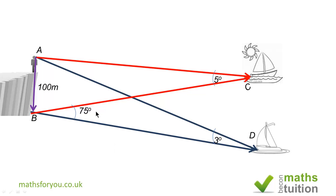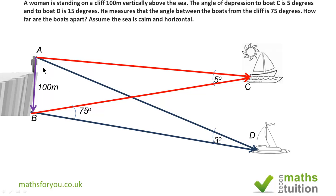A woman is standing on top of a cliff, and from her head to the sea is about 100 meters. From there she observes two boats, boat C and boat D. Boat C has an angle of elevation of 5 degrees, which is also the angle of depression from her. Boat D has an angle of elevation of 3 degrees, which is also the angle of depression from her.